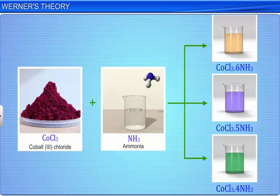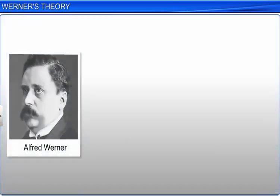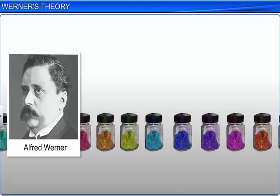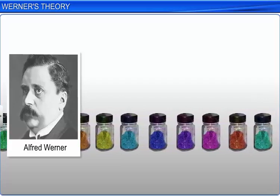Alfred Werner, a Swiss chemist, after preparing thousands of new compounds and studying their properties, put forward a theory to explain the formation of complex compounds.